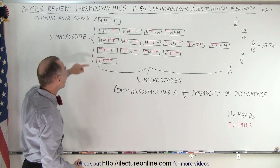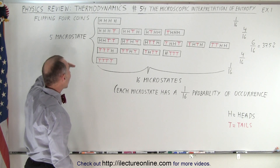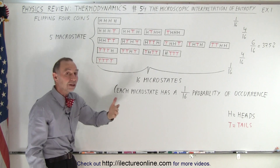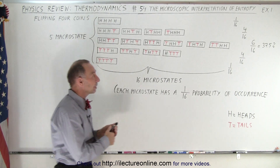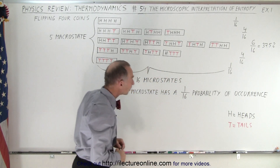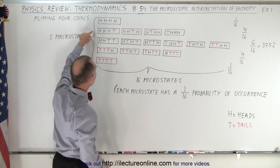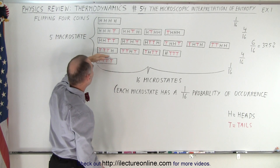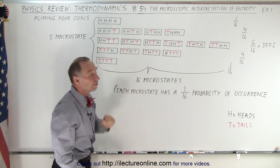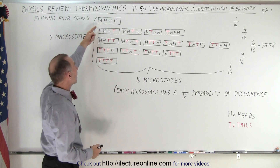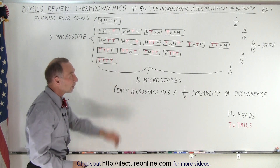So the micro state with the highest entropy is the middle one right here, where we have two heads and two tails, and that probability of occurrence is 37.5 percent. The probability of occurrence where we have either three heads and one tail is 25 percent, or three tails and one head is another 25 percent. And finally, the probability of having all heads or all tails is just one out of 16.